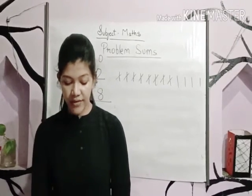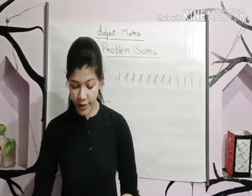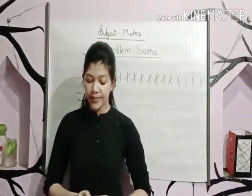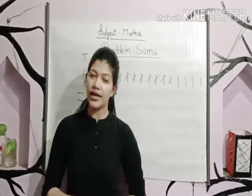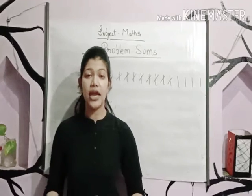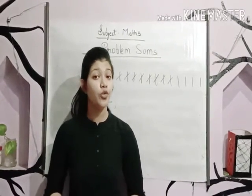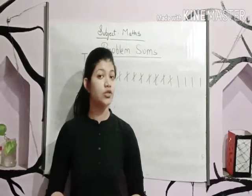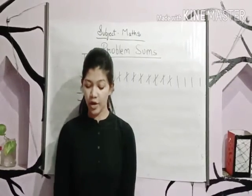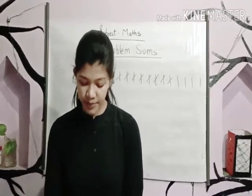Question number three — I will read it but you will solve yourself. There are fifteen flower pots in Baljeet's garden. In the morning, he watered nine of them. How many plants are left to be watered? You will decide what operation to use by yourself.